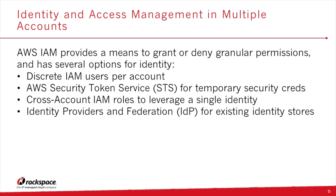Cross-account IAM roles are a method of granting resource access in one account from a secondary or tertiary account, with a trusted principal in a different account. This is referred to as cross-account access. Roles are the primary way you grant cross-account access, though with some AWS services you can attach policies directly to a resource instead of using an IAM role as a proxy.